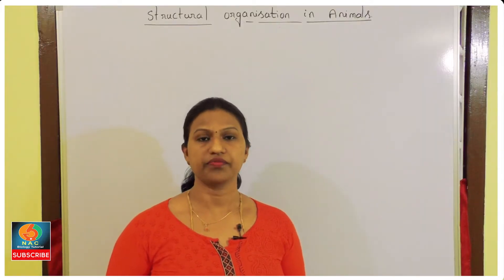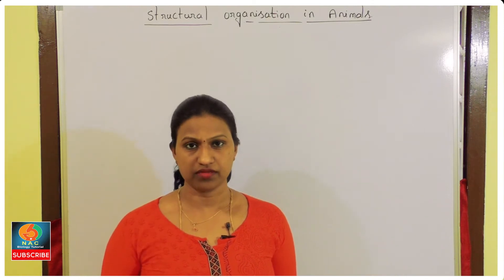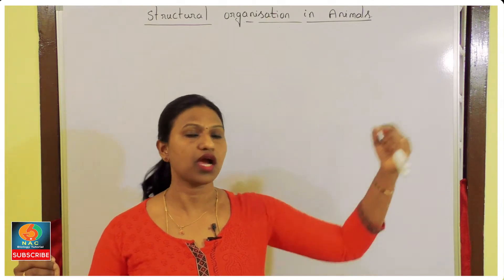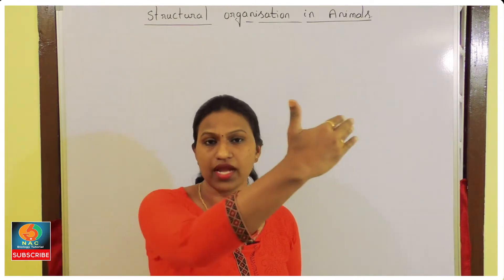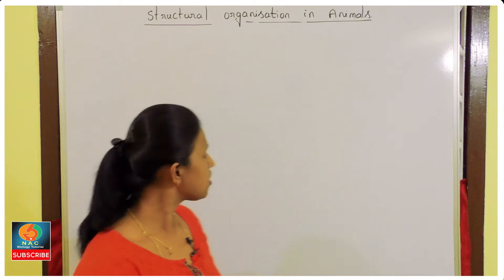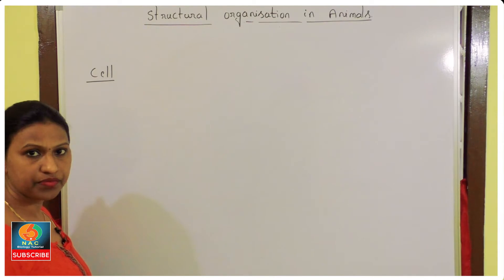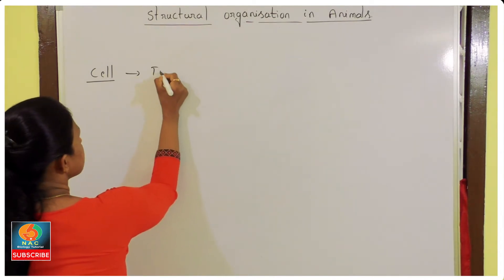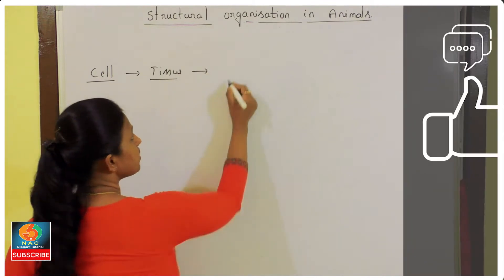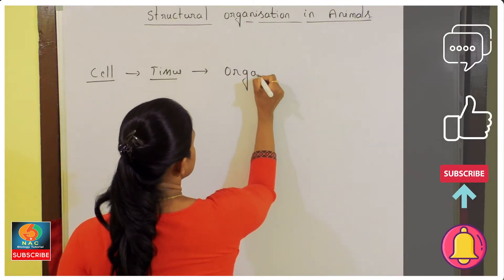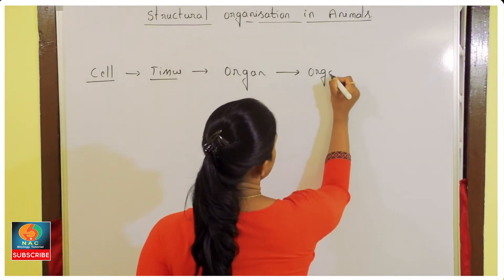Welcome back students. As we know, any organism you take — from unicellular up to multicellular — as we already learned in animal kingdom, from primitive to advanced, there are organisms which are of cellular level, tissue level, organ level, and when you move towards the advanced organism, there we find organ system level.